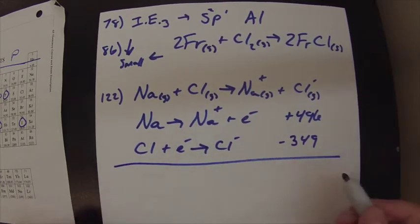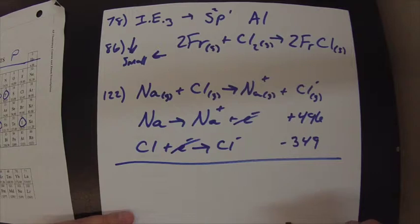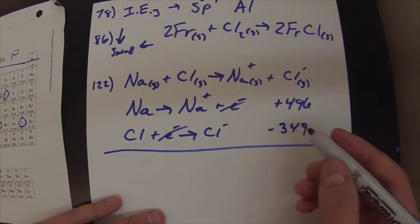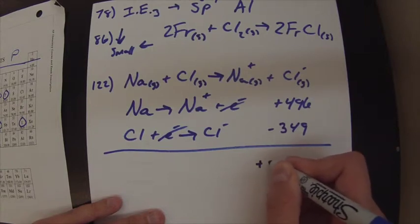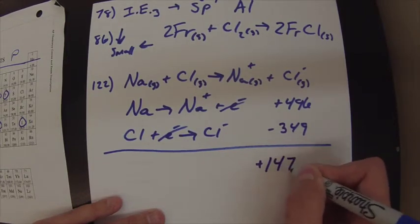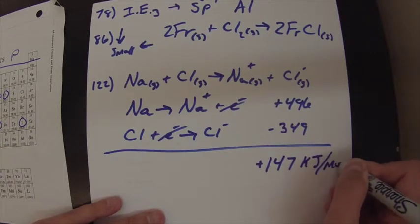And so this is kind of like Hess's law, where these cancel out, and you end up with the exact equation you want. So you would just add these up, really simply, and it would equal positive 147 kilojoules per mole.